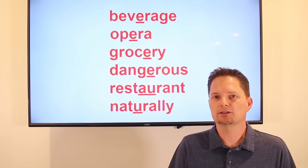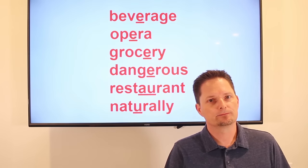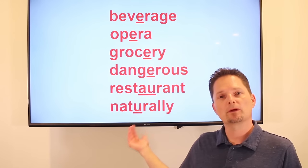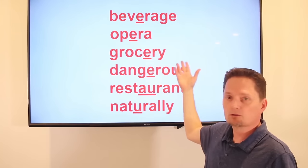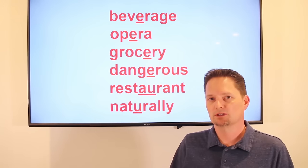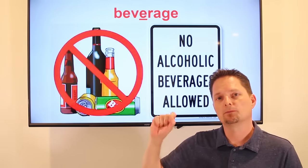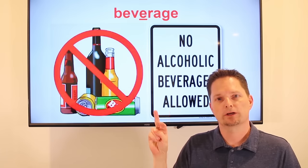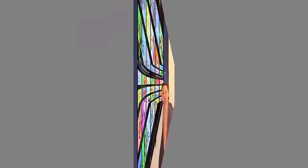Hello, welcome to English for Everyone. Today we're going to practice some words with a silent syllable in the middle — the American pronunciation. Let's look at them: beverage, opera, grocery, dangerous, restaurant, and naturally. First we have beverage — it looks like three syllables 'bev-er-age,' but we only pronounce two: 'beverage.'